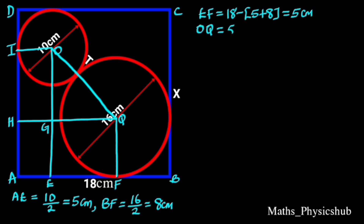OQ equals 5 plus 8, which is 13 cm. The reason is external touching, which is the sum of the radii of the two circles. GQ equals EF, which is 5 cm. Since triangle GOQ is a right angle triangle, we are going to use Pythagoras' rule to find GO.